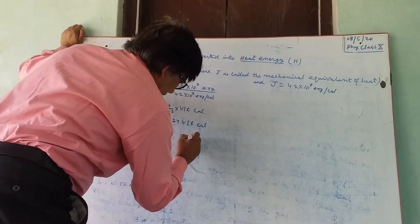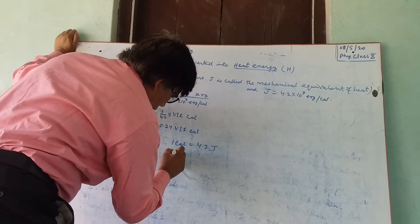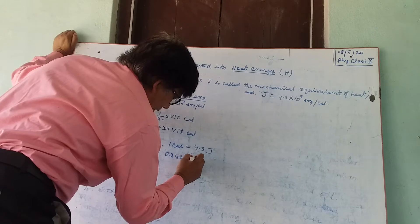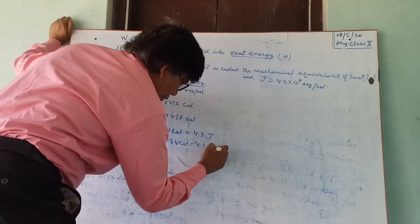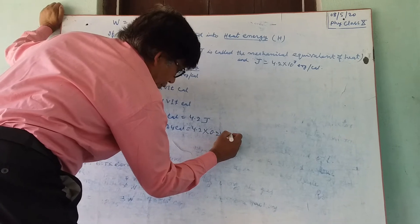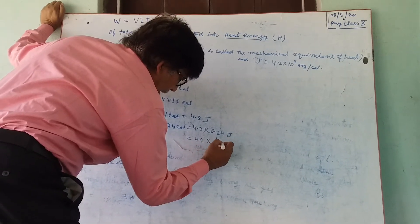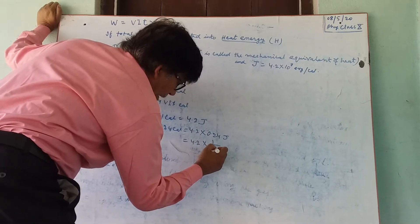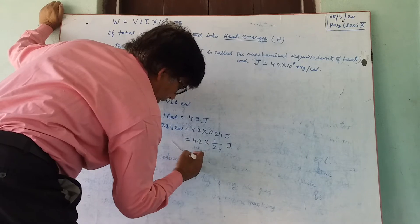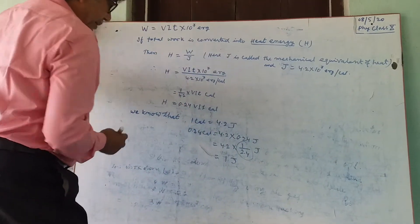1 calorie by 4.2 joules, or 0.24 J equals 4.2 into 1 by 4.2 J equals 1 joule. This you will get from here.